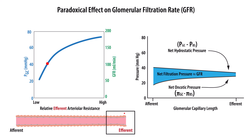Starting with an efferent arteriole that's mildly vasoconstricted — low resistance — we have a hydrostatic pressure of about 40 mmHg. On the graph, we start at the afferent side with 40 mmHg, and it declines as we move through the capillary and out the efferent side because we're filtering fluid. The oncotic pressure increases from the afferent to the efferent side because the loss of fluid concentrates the protein or albumin inside the capillary. Hydrostatic pressure pushes fluid out, and oncotic pressure opposes it — the difference between those two drives glomerular filtrate formation.